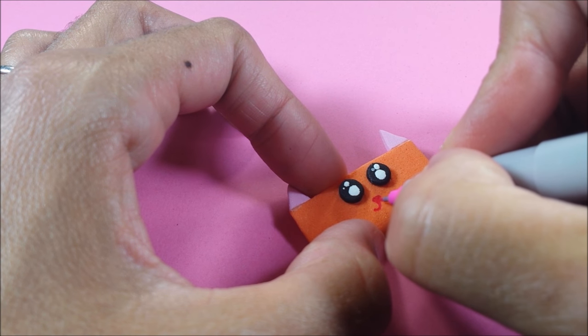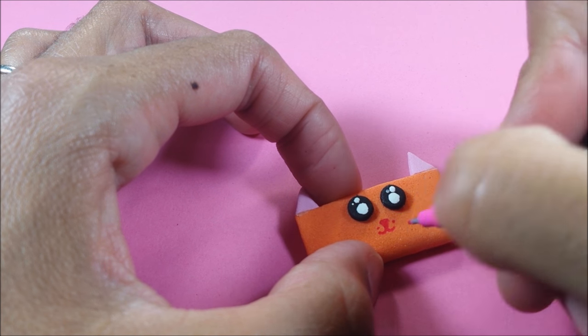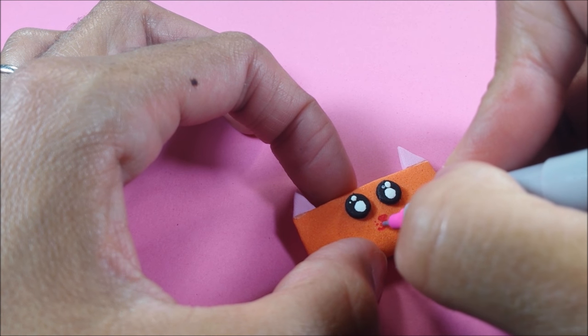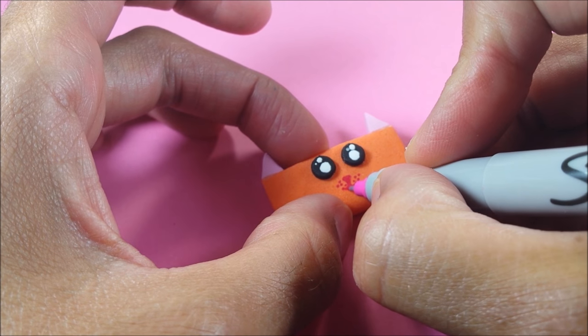Again, just gluing my eyes and then just drawing a tiny little nose and a little mouth. To top it off, I could not pull off whiskers. My whiskers just kept looking ridiculous, so I'm just doing freckles instead and a tiny little tongue.